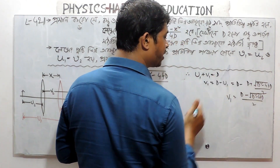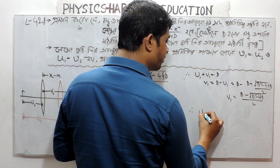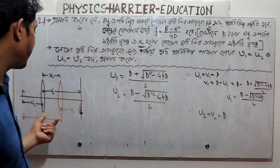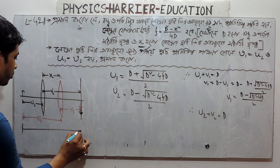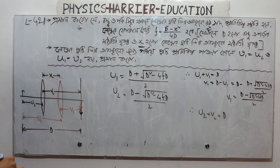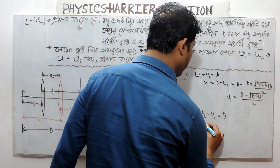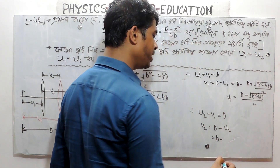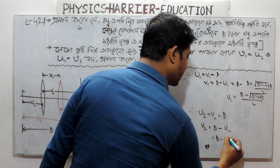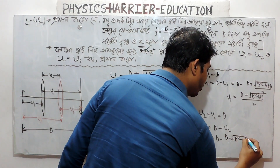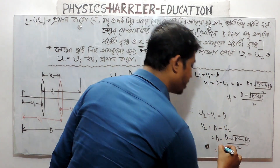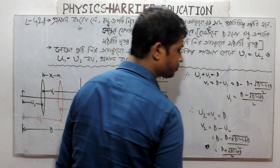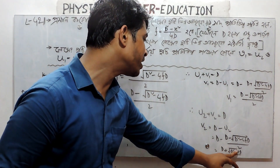Then v1 is equal to v2. Second, u2 plus v2 equals to d. D is equal to d. So d minus u2 equals v2. d minus root over d square minus 4fd by 2. And d minus u2 gives d plus root over d square minus 4fd by 2.